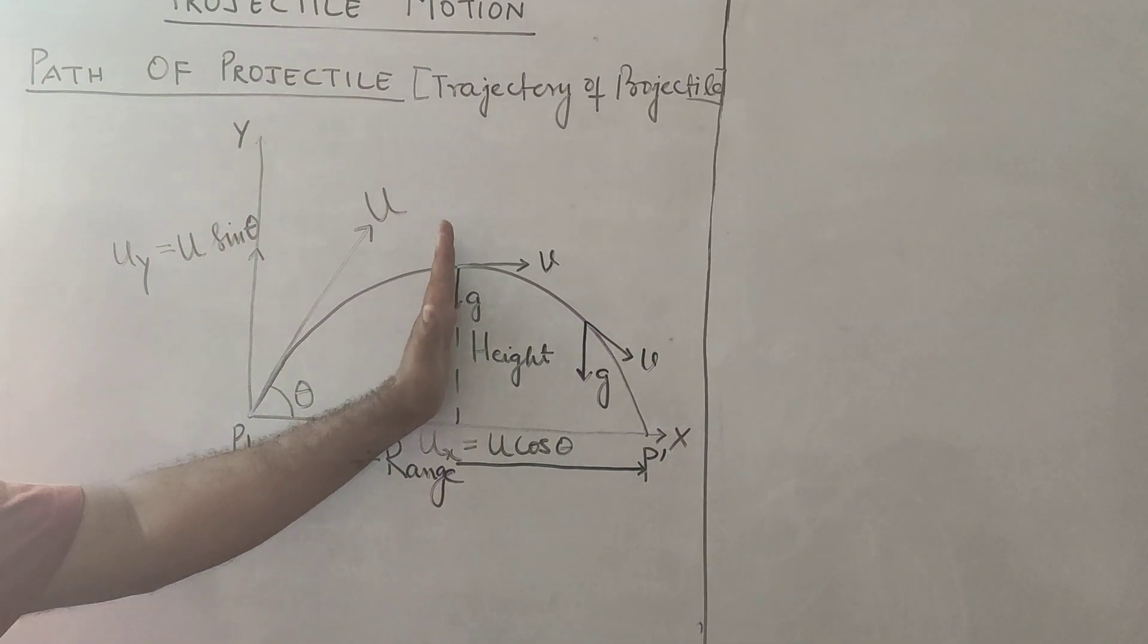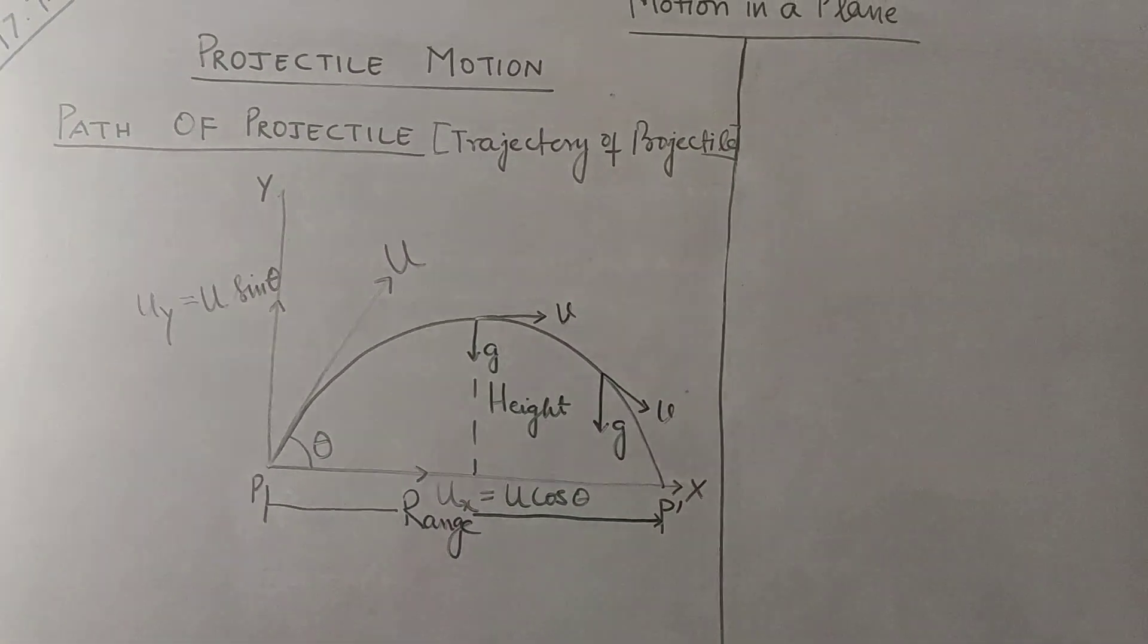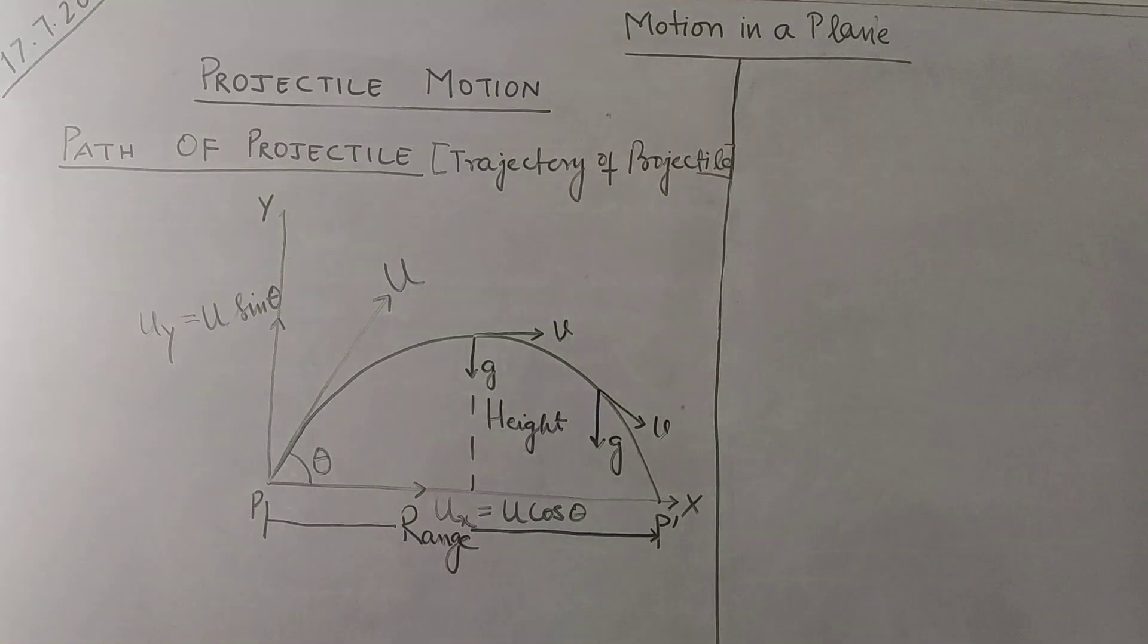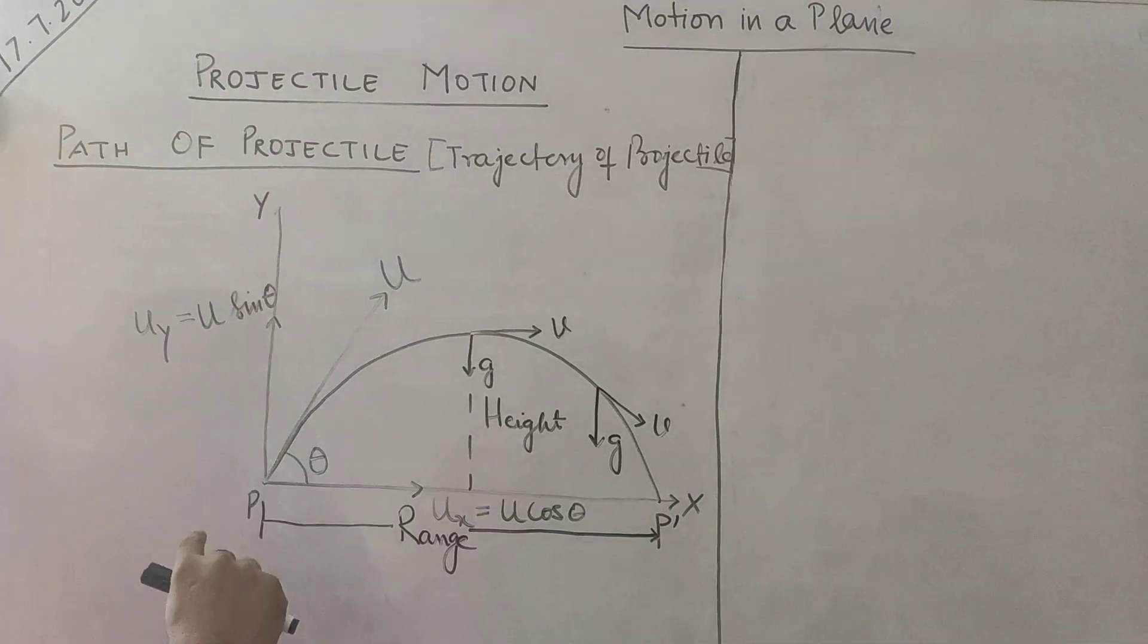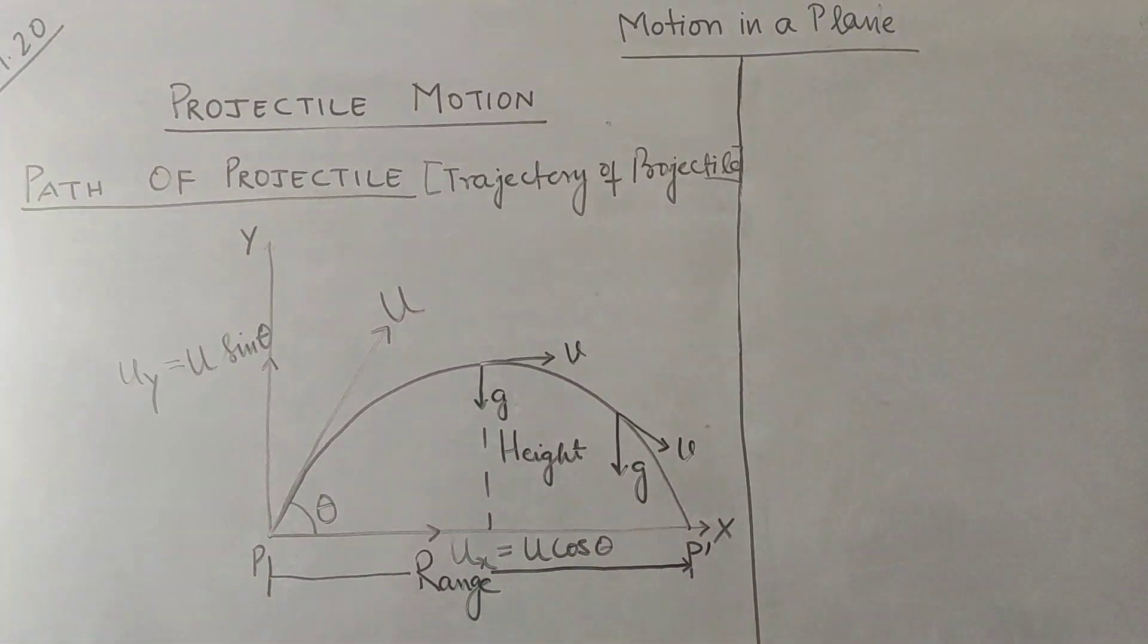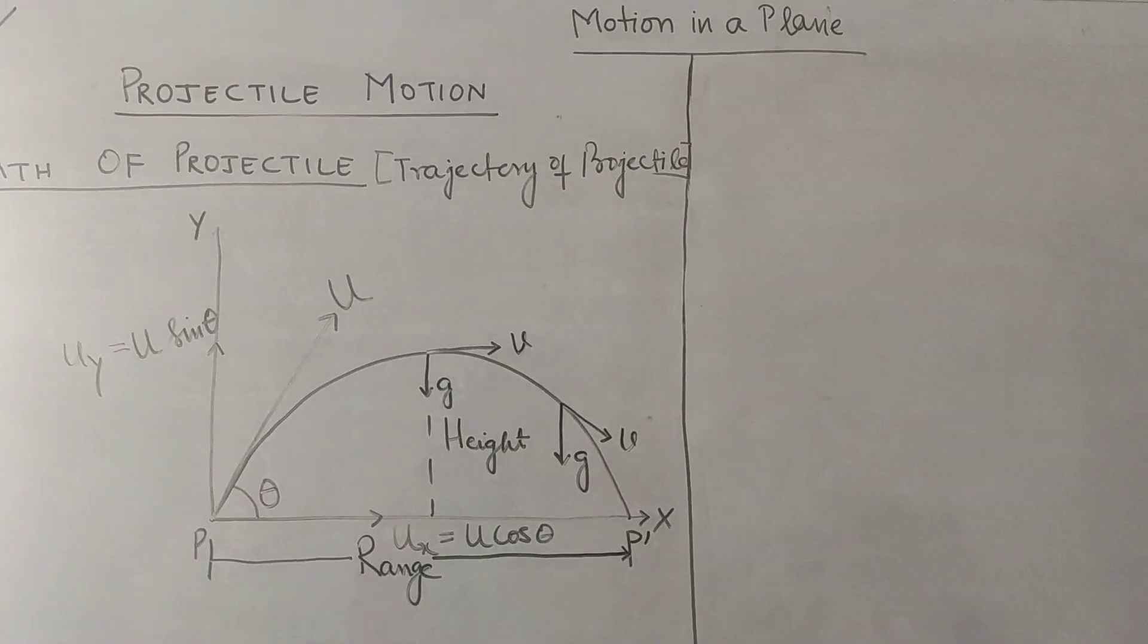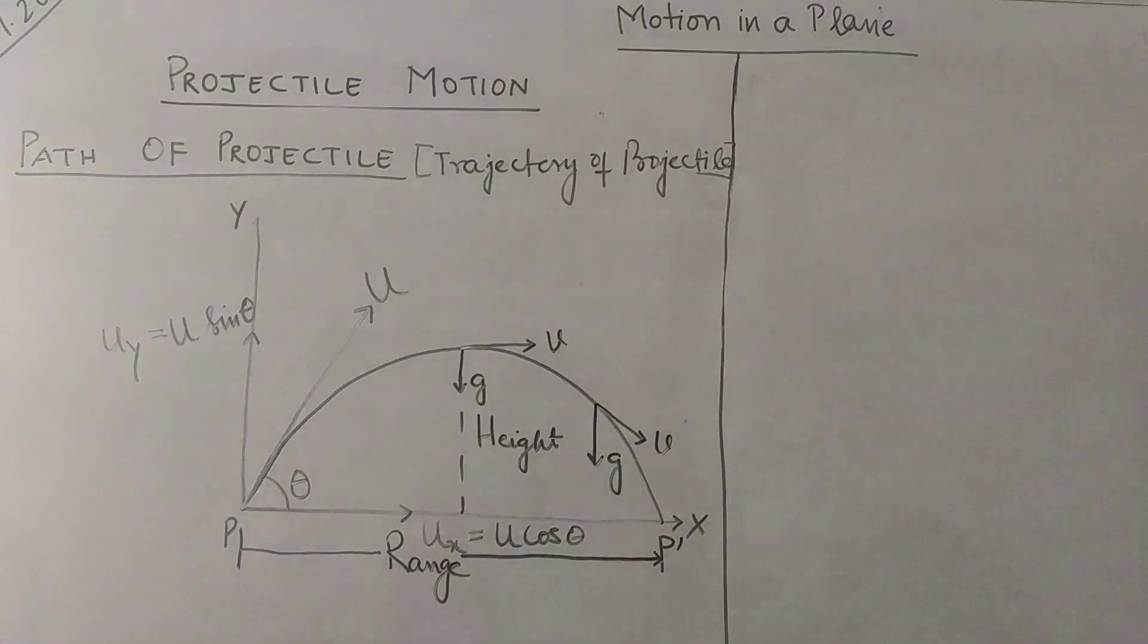When you are projecting an object at an angle theta, you can see that it is covering some vertical distance as well as along horizontal. So it covers motion along two dimensions. This is the best example, that is projectile motion. Now you need to find the path of projectile. It seems like a parabola but you have to justify. You have to justify that this path is parabolic.